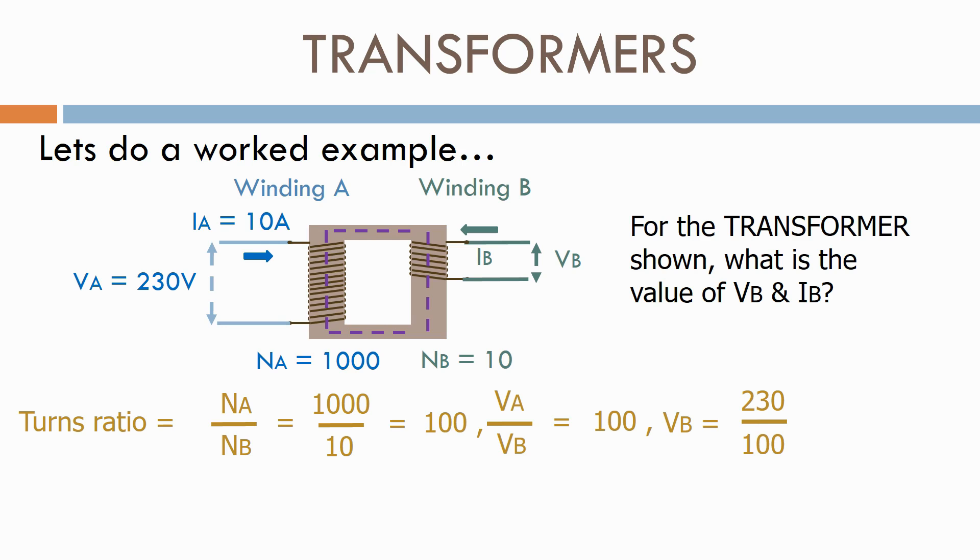which is the voltage on winding A, divided by the turns ratio, which is 100. Therefore, VB equals 2.3 volts.